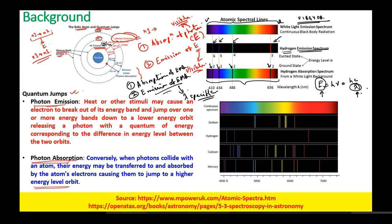Both the emission spectrum and the absorption spectrum occur at the same energy levels. These different wavelengths will give you information about the quantum jumps within the specific orbits of the electron shells.